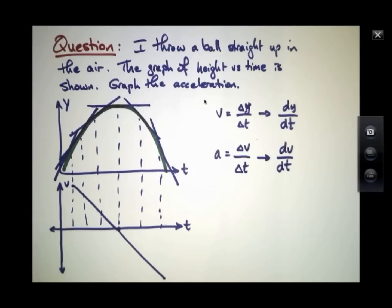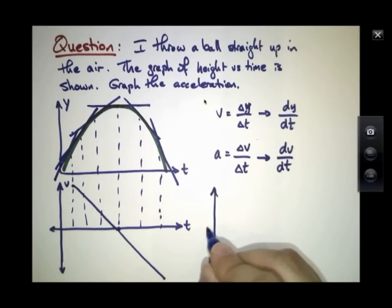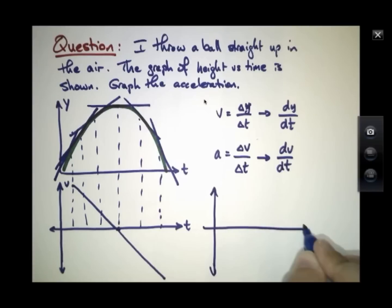It's the derivative, dv/dt. If I were to graph the acceleration, this being time, this being acceleration, this would work out to be just a negative number, and it would be a constant. It would look something like that.